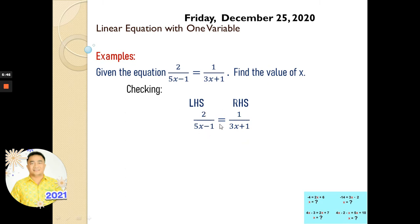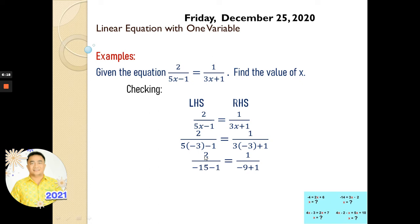We go back to our original equation: 2 over (5x minus 1) equals 1 over (3x plus 1), and we substitute x with negative 3. On the left side: 2 over (5 times negative 3 minus 1) = 2 over (negative 15 minus 1) = 2 over negative 16. On the right side: 1 over (3 times negative 3 plus 1) = 1 over (negative 9 plus 1) = 1 over negative 8.